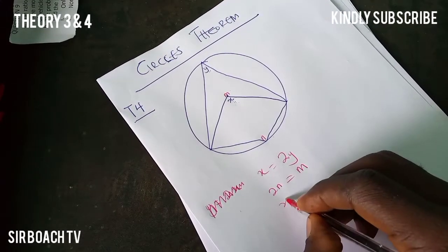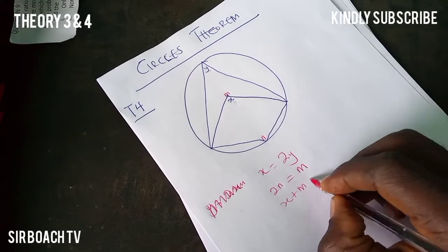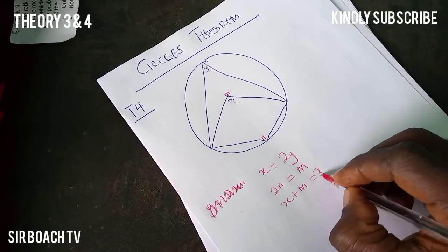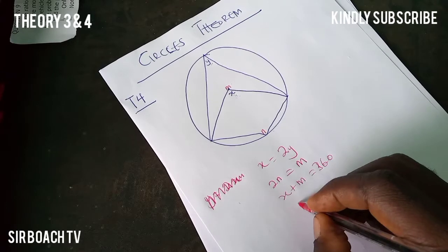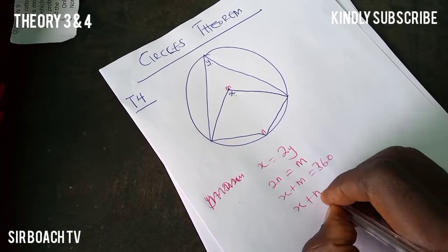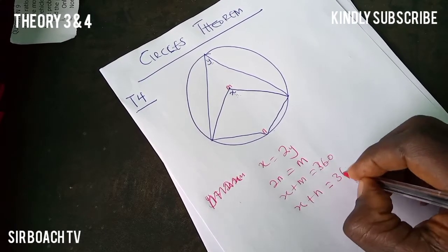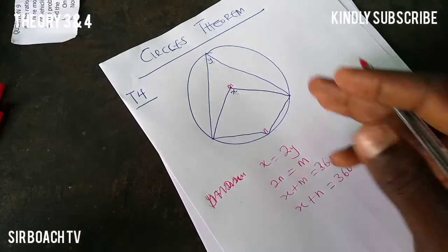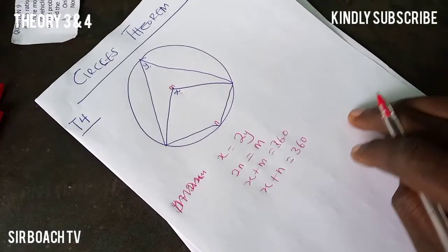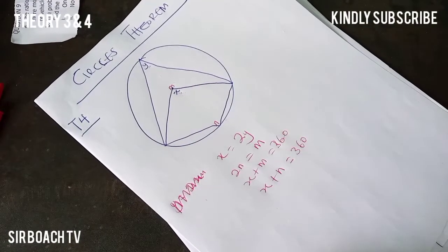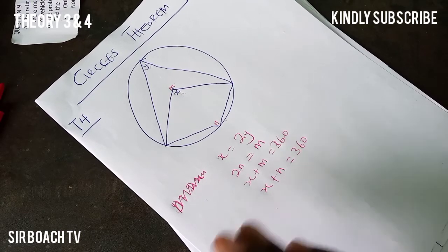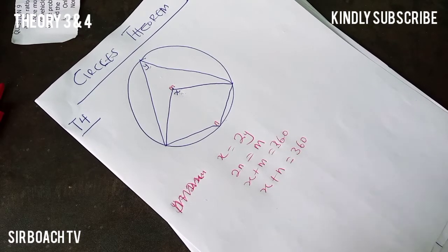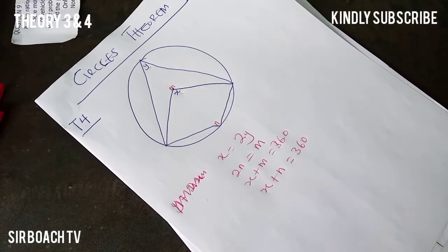Also, X plus M will give you 360 degrees, and X plus N will also give you 360 degrees. These are the things we use when applying Theorem 4. Now let's take a question on this.